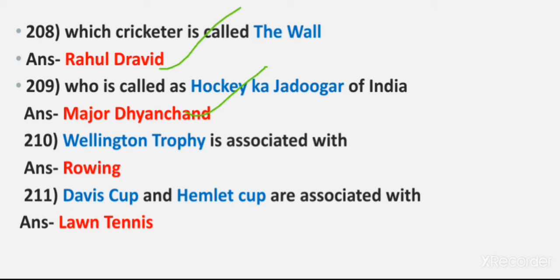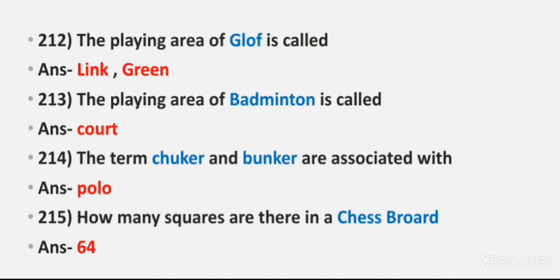Question 210: Wellington Trophy is associated with. Answer: Rowing. Question 211: Davis Cup and Hamlet Cup are associated with. Answer: Lawn Tennis. Question 212: The playing area of Golf is called. Answer: Links/Green. Question 213: The playing area of Badminton is called. Answer: Court.